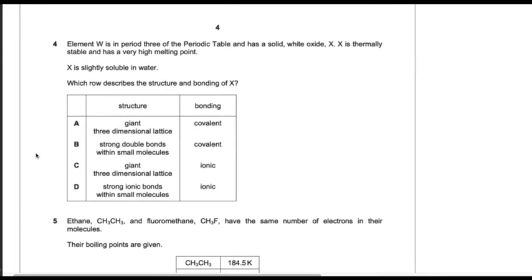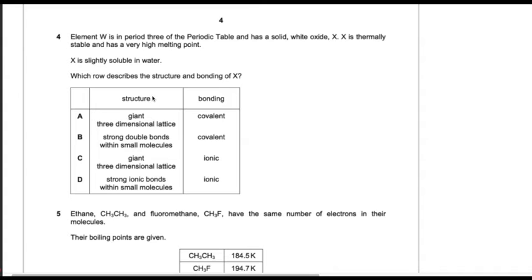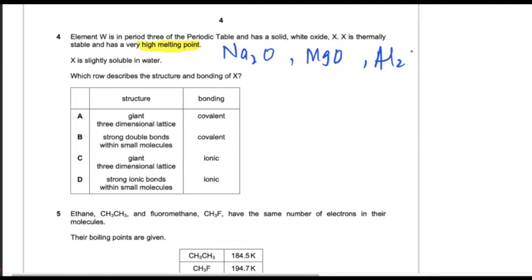Question number four. Element W is in period 3 of the periodic table and has a solid white oxide X. X is thermally stable and has a very high melting point. From the very high melting point we can deduce this is most probably an ionic compound in period 3. The options would be Na2O, MgO, or Al2O3. SiO2 is not included because SiO2 is not a white solid.